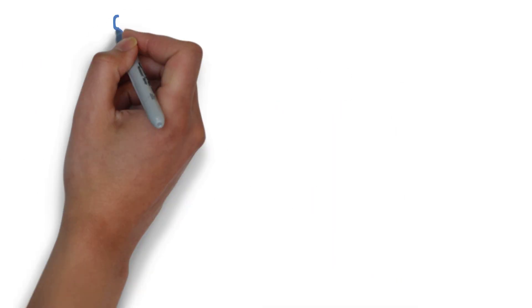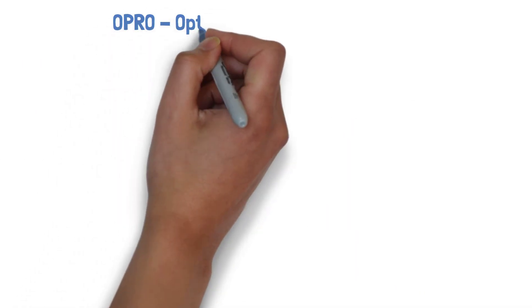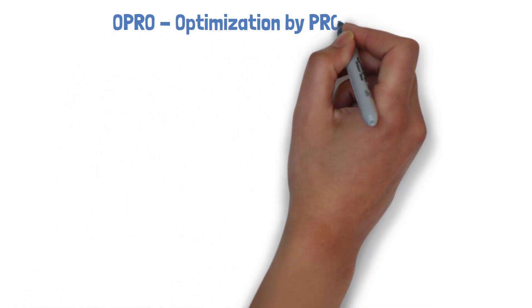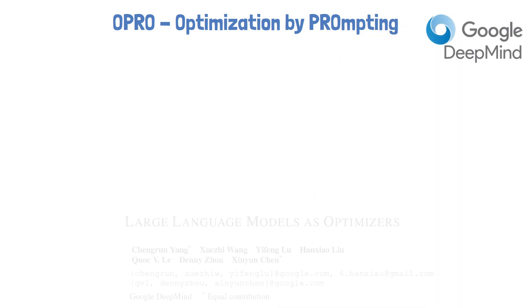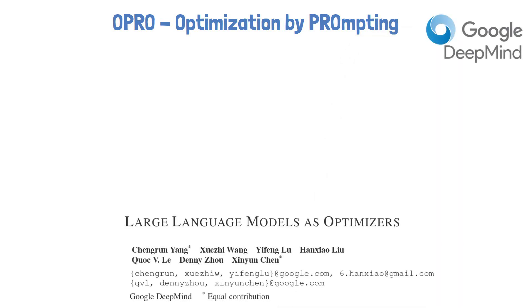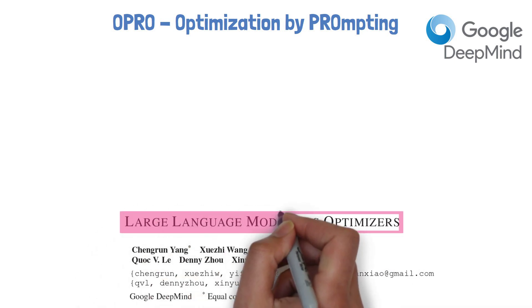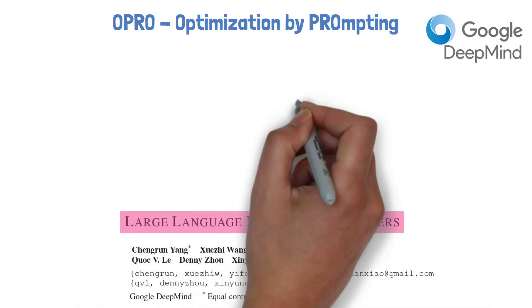Thank you for joining this video about OPRO, optimization by prompting, a new approach to leverage large language models as optimizers, which was introduced by Google DeepMind in a research paper titled 'Large Language Models as Optimizers.'